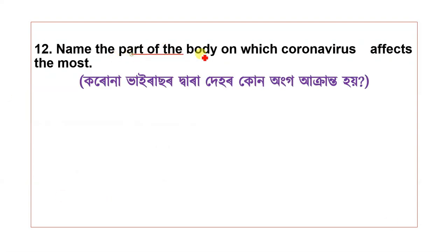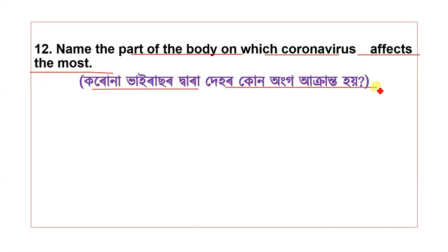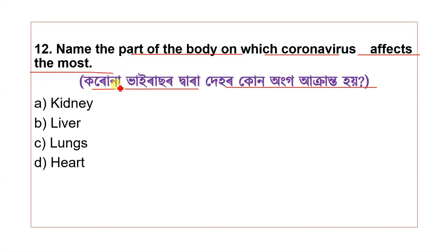Question 12: Name the part of the body on which coronavirus affects the most. The options are kidney, liver, lungs, and heart. The correct answer is lungs.